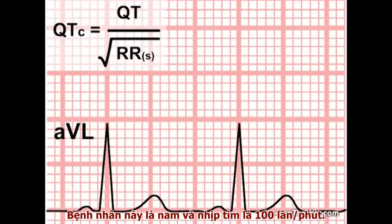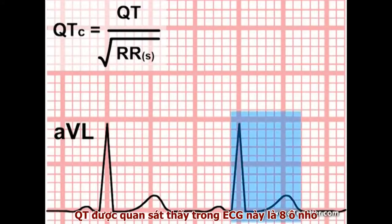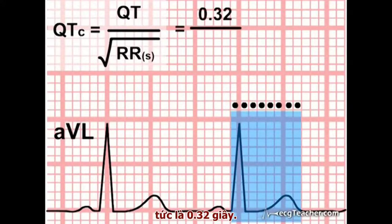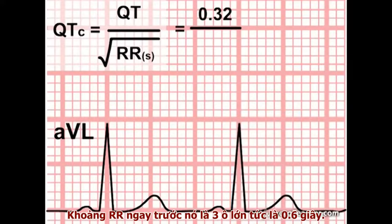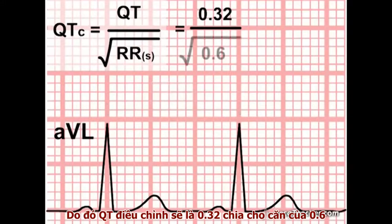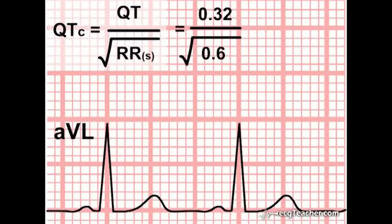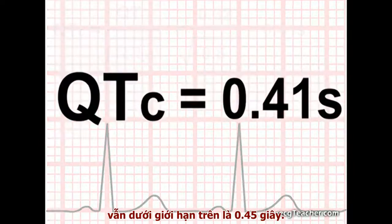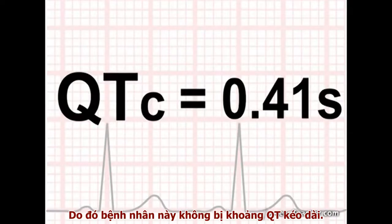The patient is male and the heart rate is 100 beats per minute. The observed QT interval on the ECG is 8 small squares, or 0.32 seconds. The immediately preceding RR interval is 3 large squares, or 0.6 seconds. So the corrected QT is 0.32 divided by the square root of 0.6. This computes at 0.41 seconds, well within our upper limit of 0.45 seconds. So this patient does not have prolonged QT.